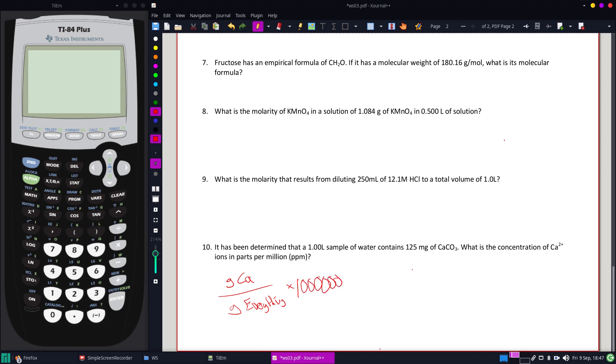So I'm going to do that top part first. Instead of writing down 125 milligrams, I'm going to write down 0.125 grams of calcium carbonate. Now, I need to convert this into grams of just calcium.